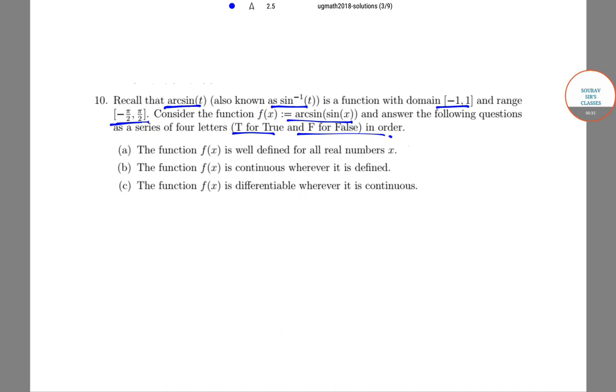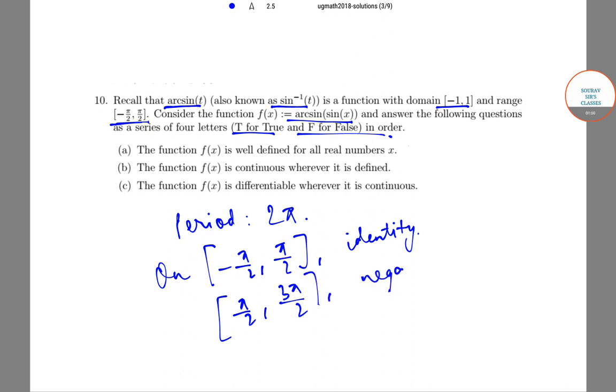Now we know that this is a periodic function with period 2π. On the interval [-π/2, π/2], this function is an identity, and on [π/2, 3π/2], this function is a negative identity. Hence,